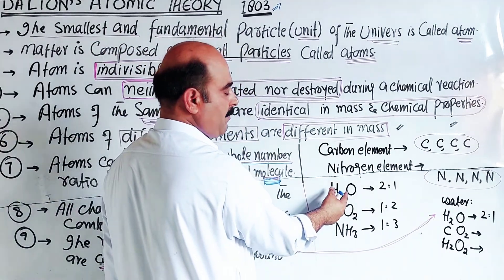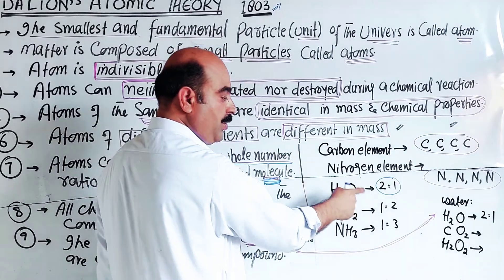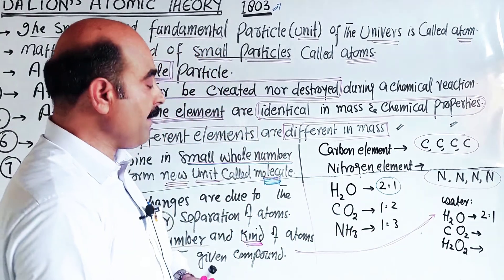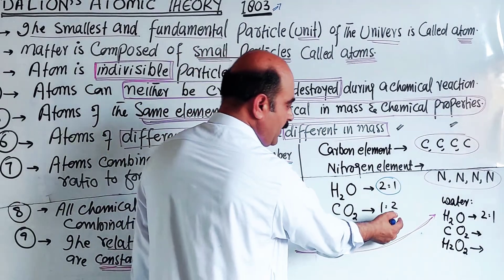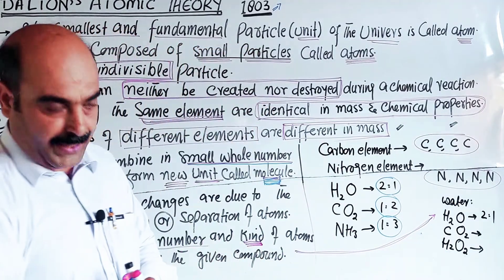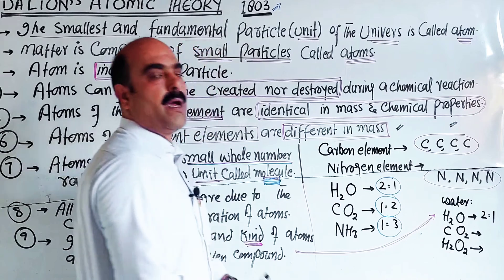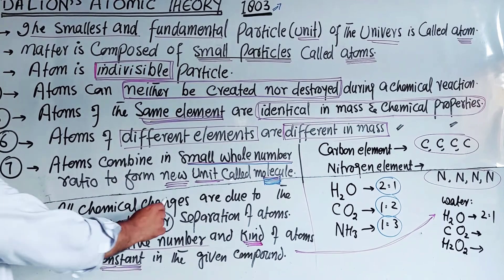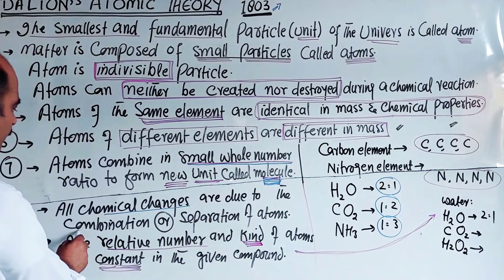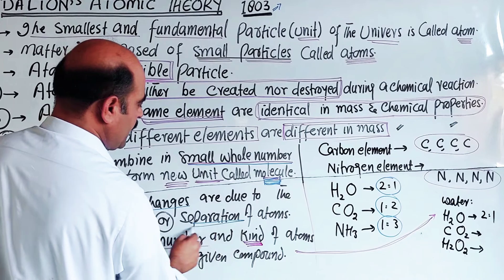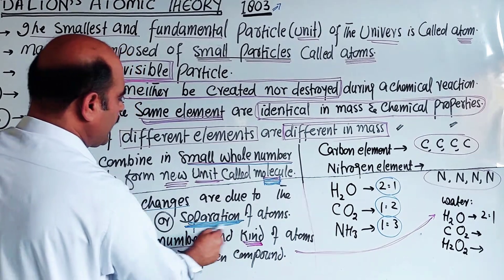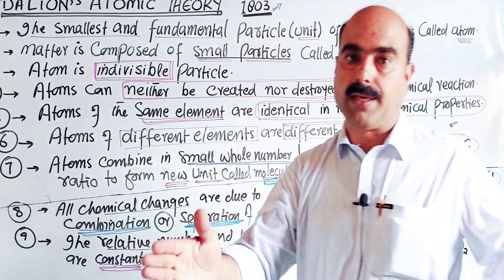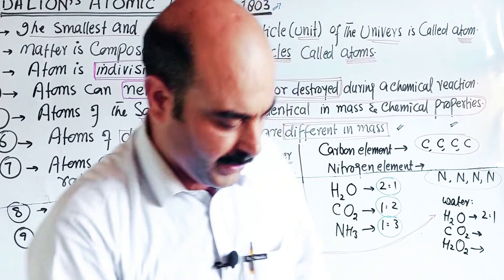Point Number Seven: Atoms combine in small whole number ratios to form a new unit called a molecule. For example, oxygen and hydrogen combine in a 2:1 ratio and water is the new unit. Carbon and oxygen combine in a 1:2 ratio to form CO2. Nitrogen and hydrogen combine in a 1:3 ratio to form ammonia. Point Eight: All chemical changes are due to combination or separation of atoms.